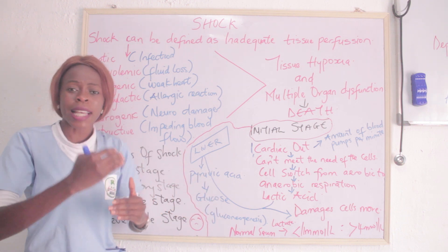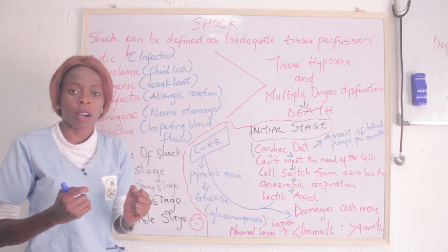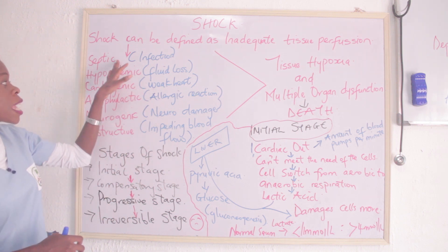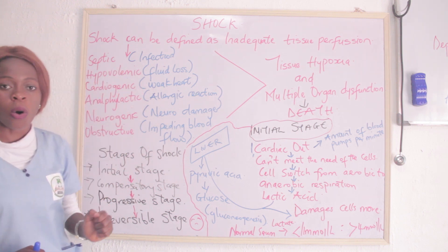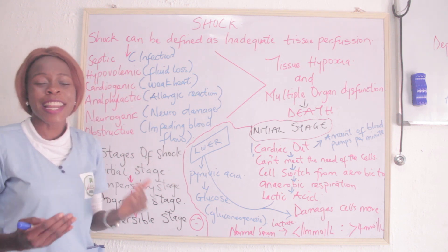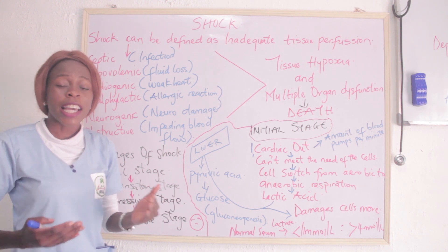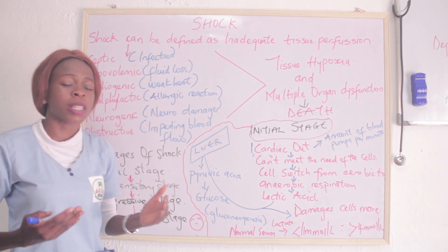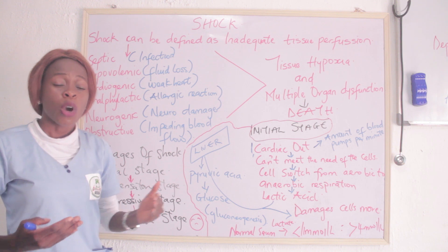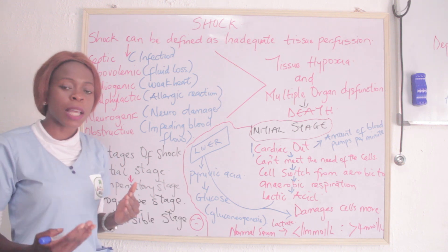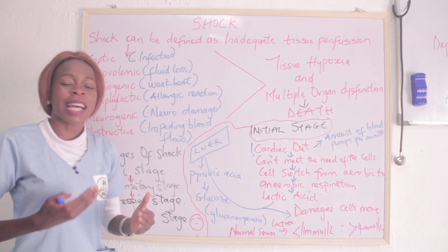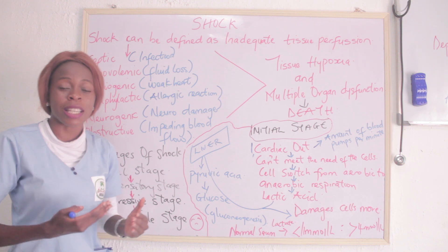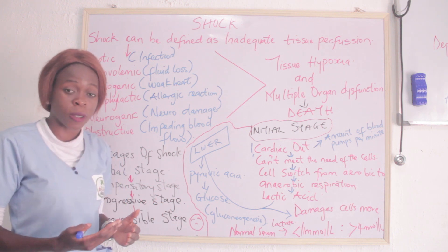What usually causes this inadequate tissue perfusion takes us to the various types of shock. The first is septic shock. As the name implies, septic — it is all about infection, it is all about sepsis. Whenever you hear septic shock, just know it's as a result of sepsis, as a result of infection.